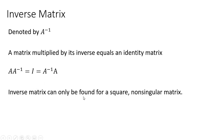An inverse matrix can only be found for a square matrix — a matrix with the same number of rows as columns — and a non-singular matrix, which means that the determinant of the matrix is not 0.